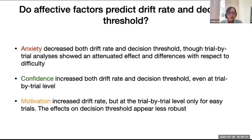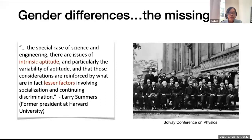Now I want to turn to potential gender differences in mental rotation. Gender differences on this type of test are large and are thought to contribute to women's underrepresentation in STEM fields. Although many people acknowledge the role of socialization in these gender differences, less is known about how affective factors such as anxiety, confidence, and motivation may impact performance. Here, we look at these potential effects on male and female performance on the mental rotation task.